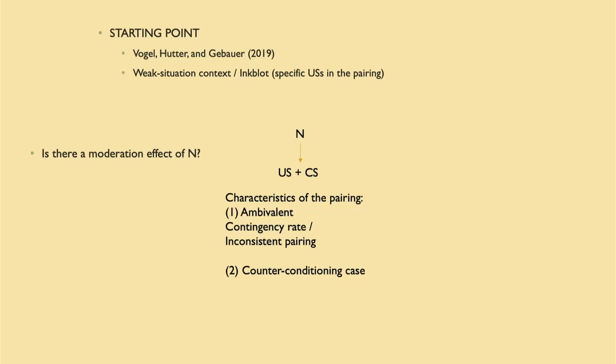The starting point was that article. Another important idea in the framework is the weak situation context — which means, for instance, if it's a funeral situation, probably all people are upset and it doesn't matter if a person is less or more neurotic. But in more gray or ambiguous cases, this internal organismic variable has more importance because it's a kind of sensitivity to process specific signals. And if there is a moderation effect, you can look at this moderation between neuroticism and the pairing of the US. One characteristic of the pairing is that the contingency rate could vary.